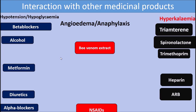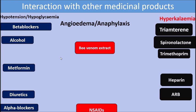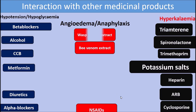The first group is drugs that cause hyperkalemia. These include potassium-sparing diuretics like spironolactone, triamterene, or amiloride, potassium salts, heparin, angiotensin receptor blockers like candesartan, and cyclosporine. These are better avoided when using ACE inhibitors because combining them causes hyperkalemia — increased potassium concentration — which carries a risk of death.